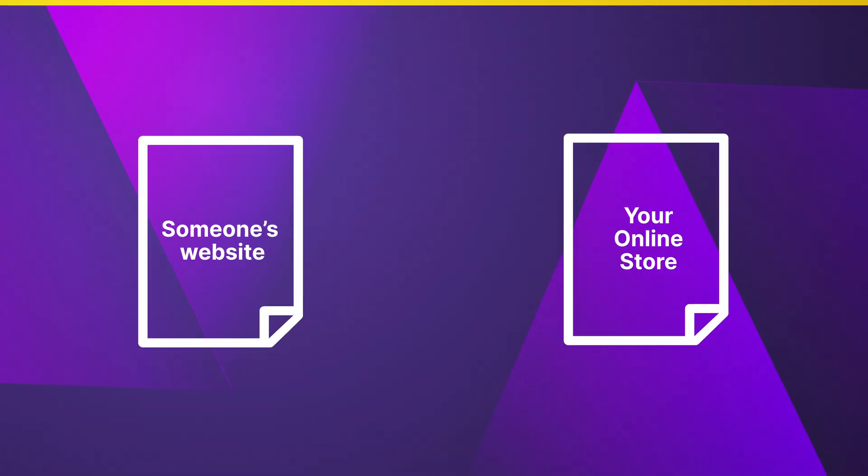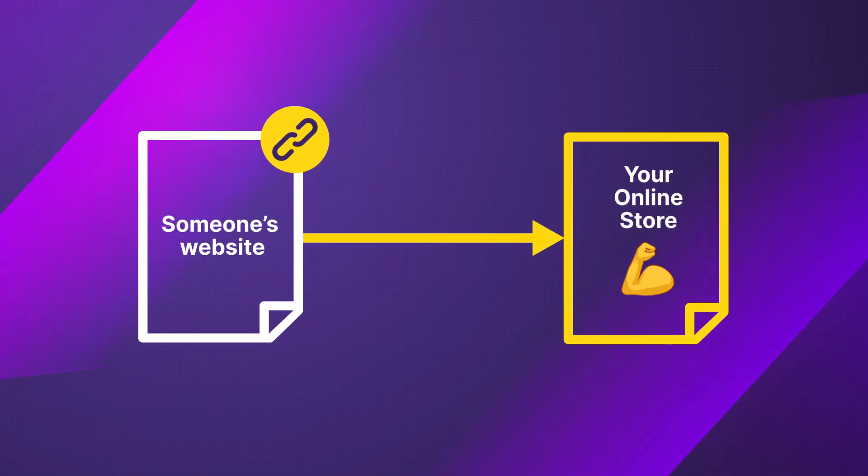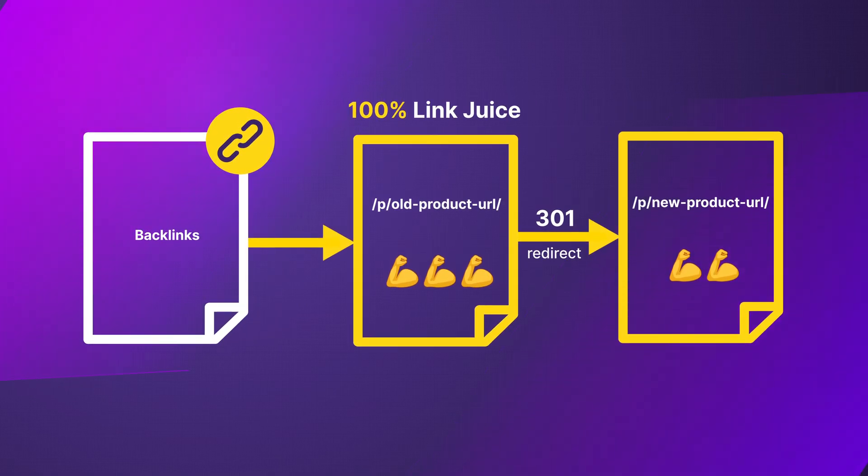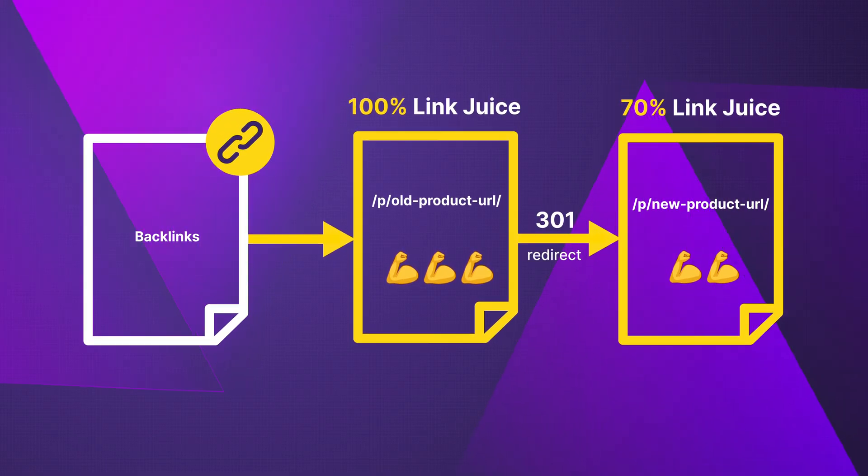Let's talk about something important called link juice. When other websites create a backlink to your store, it gives your store power or external link juice that helps it rank higher on Google. With a 301 redirect, most of the link juice goes to the new URL, but here's the catch: you lose 30% of that power with every redirect. So if your old product page had 100% link juice and you redirect it to a new page, the new page is going to get only 70% of the initial link juice. Use redirects only when you really need them.